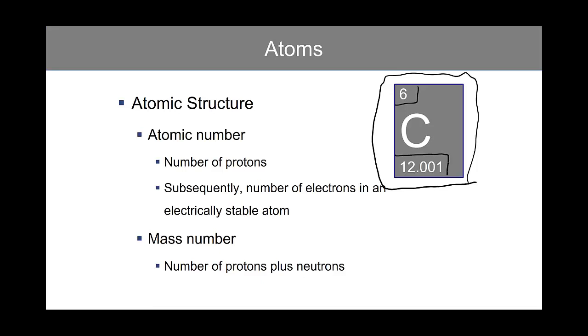The lower number is the atomic number. The atomic number is the number of protons. It also equals the number of electrons in an electrically stable non-isotope atom.